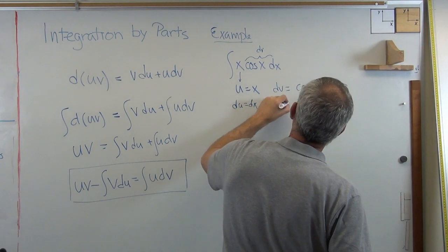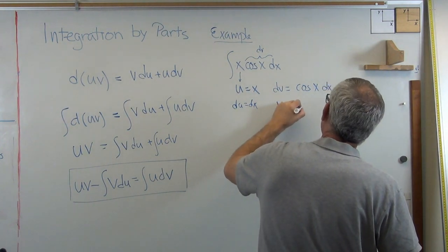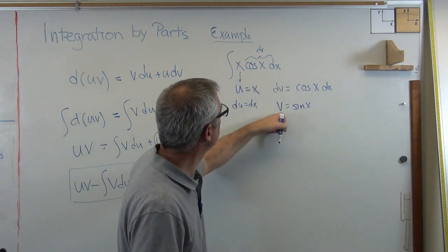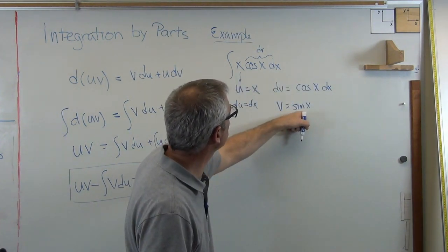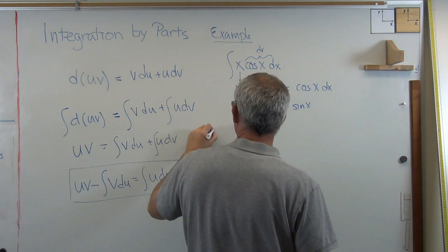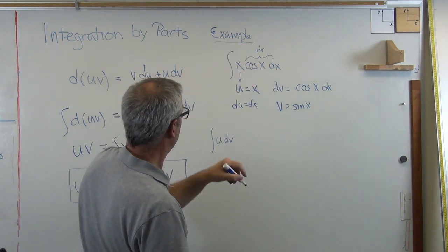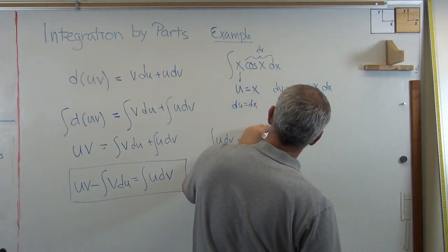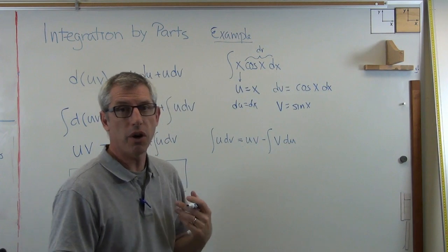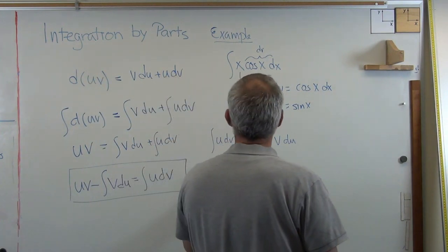And if that's dv, then v equals sine x. How do I know that's true? Well, what's the derivative of sine of x? Derivative of sine of x is cosine x dx. So there you go. So integral of u dv, which is that, that's u dv equals u v minus integral of v du. So all we're doing now is we're just turning the crank. We're just plugging some stuff in to see what comes out.